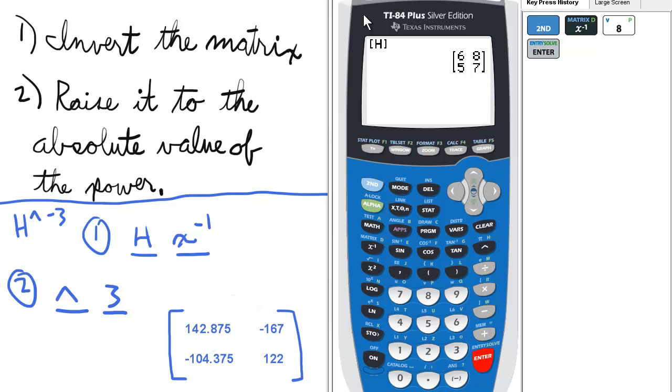First, to raise a matrix to any power, we need to be sure we're working with a square matrix. In this case, matrix H works well. Matrix G does not because it's a singular matrix. For now, just take my word that matrix G will not work when we do this. So first, we need to invert the matrix.